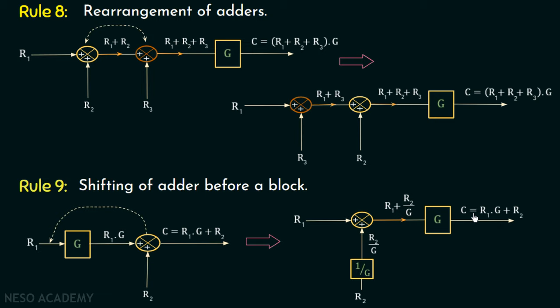So whenever we want to shift the adder before the block, we need to divide the input by the gain of the block. We are now done with rule number 9 and will move on to rule number 10.